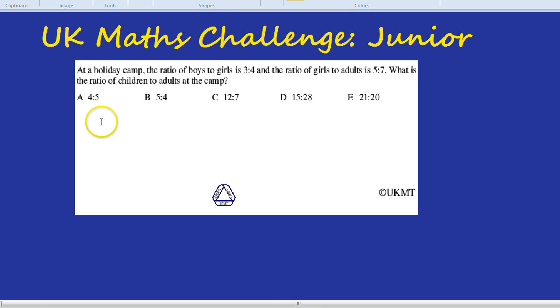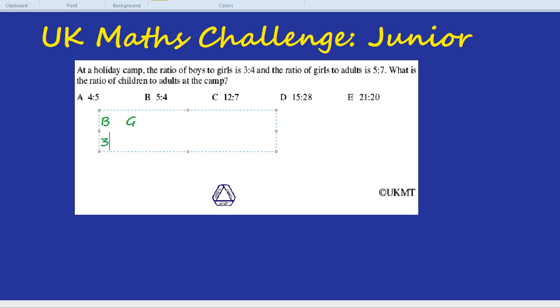Now I don't know about you but that's kind of confusing because we've got this ratio of boys to girls of 3 to 4, and we have this other ratio of girls to adults of 5 to 7. Seems to me like they're using different numbers.